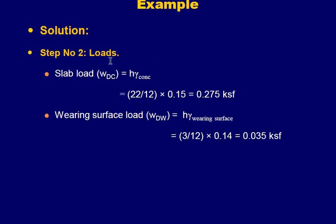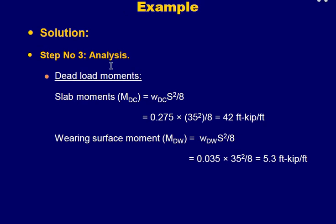Step 2: calculation of loads. With the slab thickness of 22 inches, multiplying by the unit weight gives a dead load of slab of 0.275 ksf. The future wearing surface is 3 inches thick, giving a wearing surface load of 0.035 ksf. Once the loads are calculated, we analyze for dead load moments using the formula w×S²/8, giving 42 kip·ft per ft for the concrete dead load and 5.3 kip·ft per ft for the wearing surface dead load.